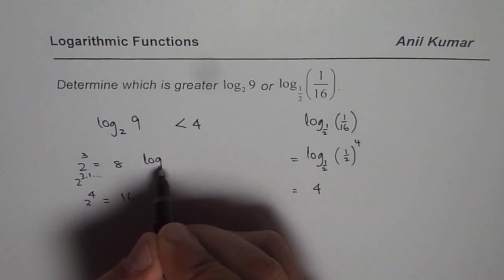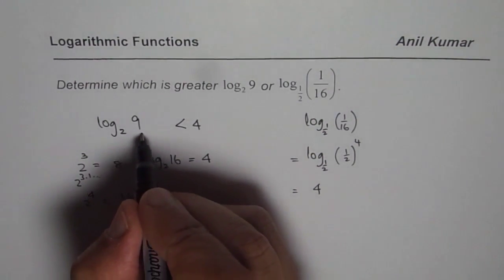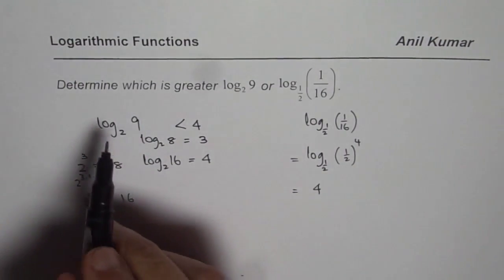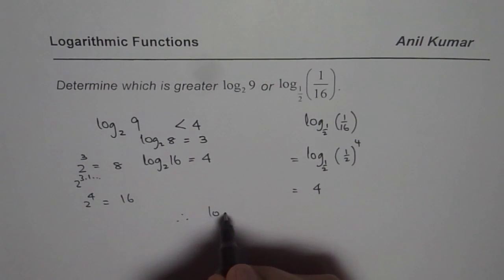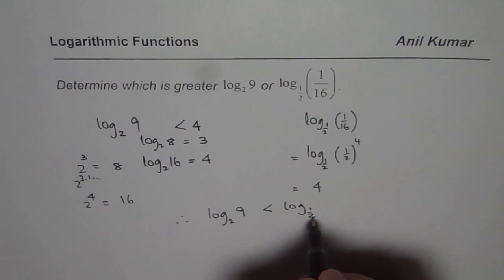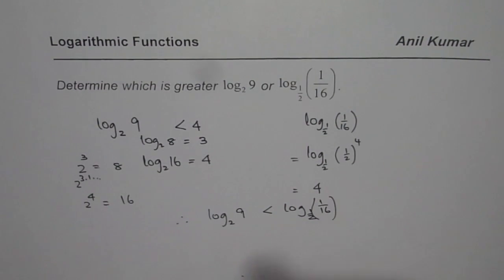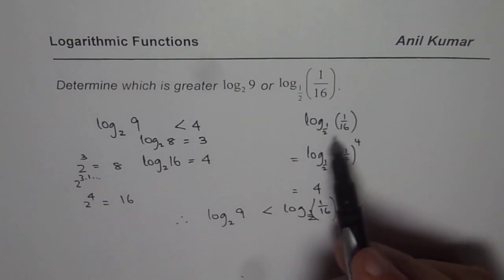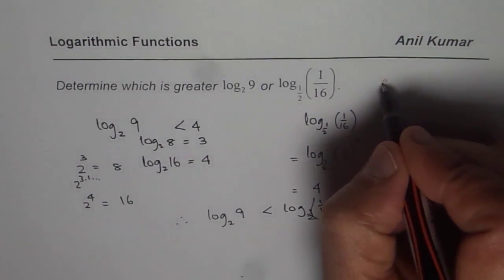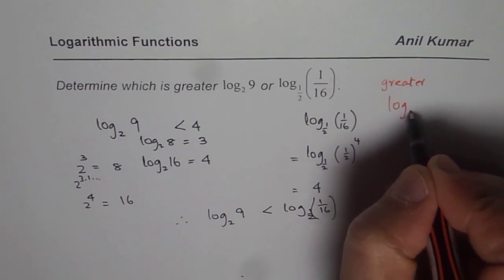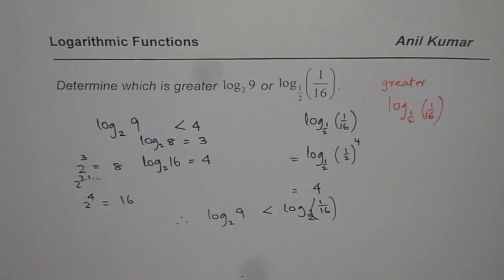Since 9 is between 8 and 16 — that is, between 2³ and 2⁴ — log base 2 of 9 is definitely less than 4. Therefore, log base 2 of 9 is less than log base one-half of 1 over 16. The greater value is log base one-half of 1 over 16, which equals 4, while the other is less than 4. Students who know the change-of-base formula can verify this as well.